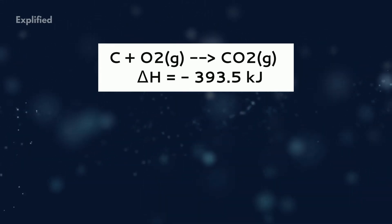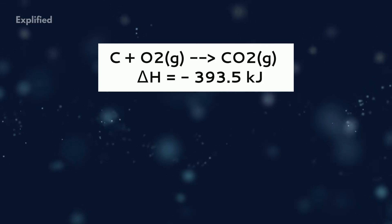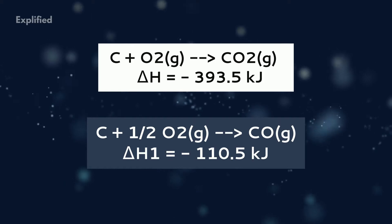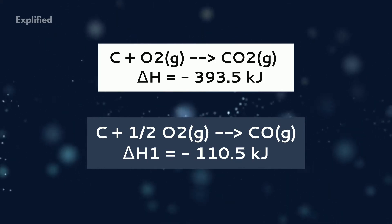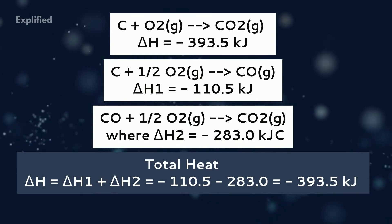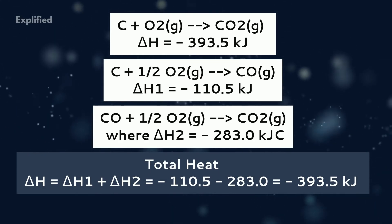CO2 can also be prepared as C plus half O2 gives CO, where delta H1 equals minus 110.5 kilojoules, and CO plus half O2 gives CO2, where delta H2 equals minus 283.0 kilojoules. Thus, total heat delta H equals delta H1 plus delta H2, which is minus 110.5 plus minus 283, which gives minus 393.5 kilojoules.